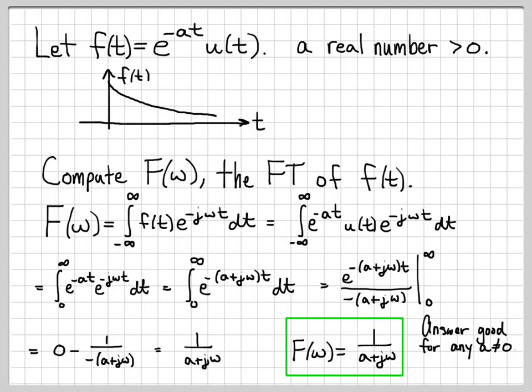But there was nothing in the math down below that required a to be greater than 0. We can't have a equal to 0 because then we would have a unit step that turned on and we would not be absolutely integrable anymore. But any other number, even a complex number a, this answer is still good. So actually this answer is good not just for real numbers, but it's good for any number, real or complex, except for the case a is equal to 0. So this answer is actually a little bit more general than the sketch we made up above.